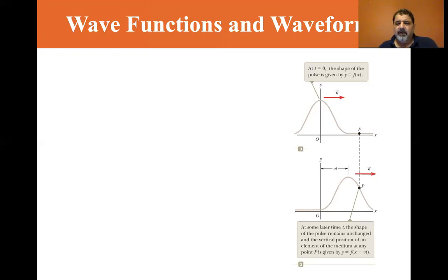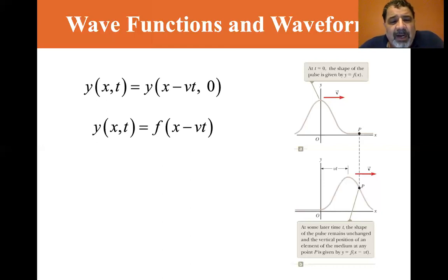And so the position of P is given by Y equals F of X minus VT, the velocity times time. The velocity of the wave. So Y of X of T is equal to Y of X minus VT at zero. And then they're just the same as it was at zero. So Y of X of T is equal to F of X minus VT. And that's for if it's going in the positive direction. If it's going in the negative direction, Y of X of T is equal to F of X plus VT.